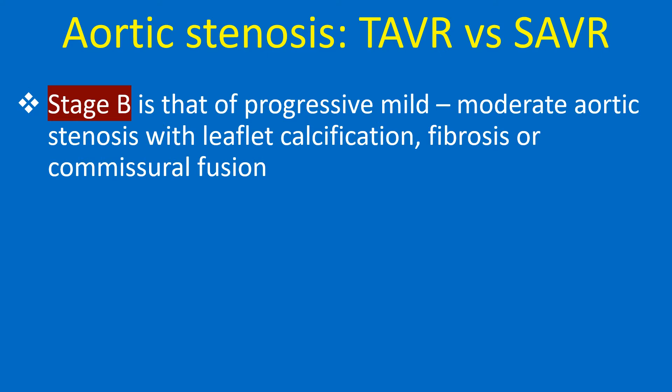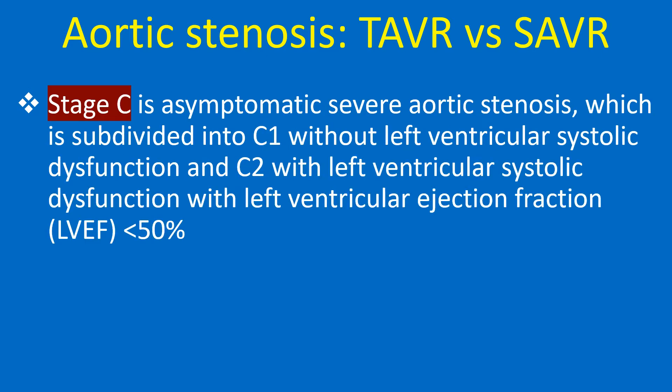Stage B is that of progressive mild to moderate aortic stenosis with leaflet calcification, fibrosis or commissural fusion. Stage C is asymptomatic severe aortic stenosis, subdivided into C1 without left ventricular systolic dysfunction, and C2 with left ventricular systolic dysfunction with left ventricular ejection fraction less than 50%.